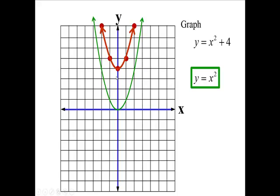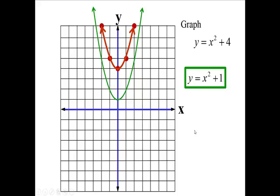So if this was a one you'd go up one step. If it's a two right here you'd go up two steps. If it's a three you would go up three steps. And ours is going up four steps. That's what this red graph shows you.